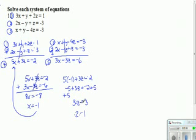Now I can take x equals negative 1 and z equals 1, and plug them back into one of my three original equations. It doesn't matter which one you pick. I'm going to pick equation 3. So x is negative 1 plus y minus 4 times z, which is 1, and that equals negative 3.